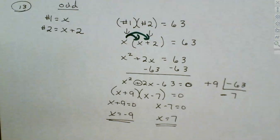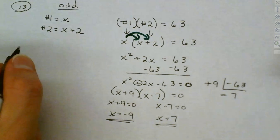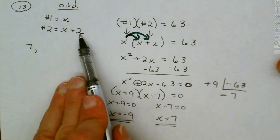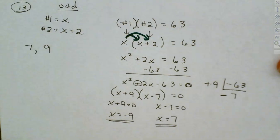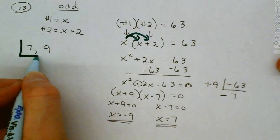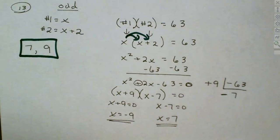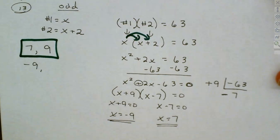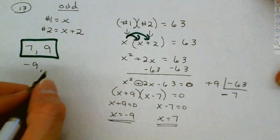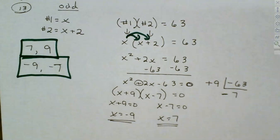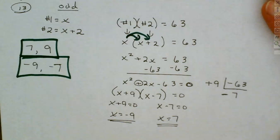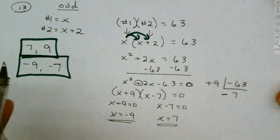What are my two solutions? The first number is 7, so if my first odd number is 7, the next odd number is 9. I can check: 7 times 9 is 63. I'll also have a negative set: negative 9, and if I add 2 to it, I get negative 7. Those multiply together to give you 63 as well, because a negative times a negative makes a positive. So we got two sets of numbers, and this is how we write our answers.